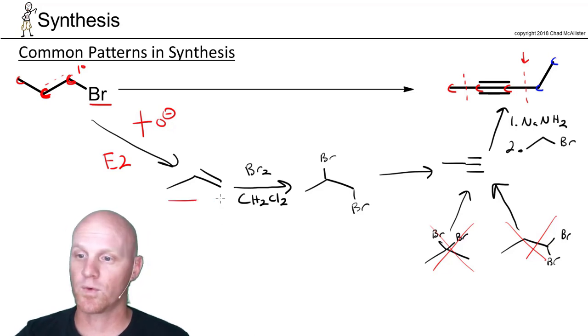There's only one possible alkene that can form, and it's the one we want, so we'll get a great yield, and because we use the bulky base, we don't have to worry about much in the way of SN2 competing with it.